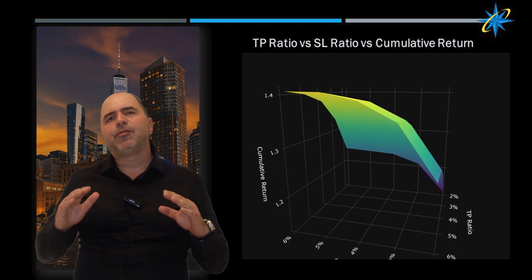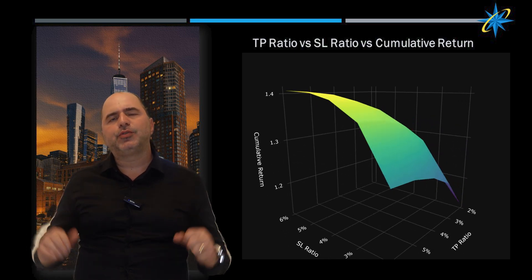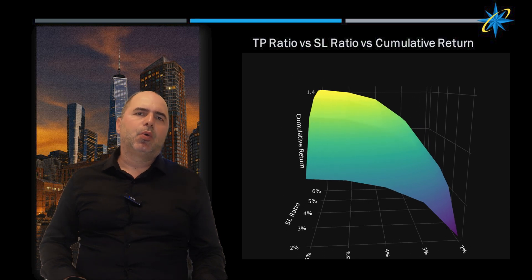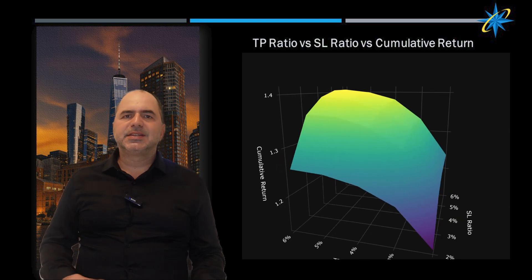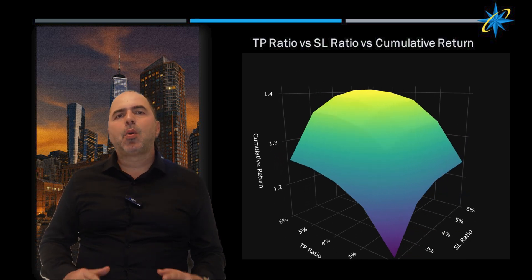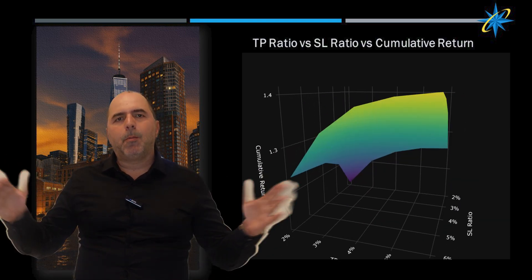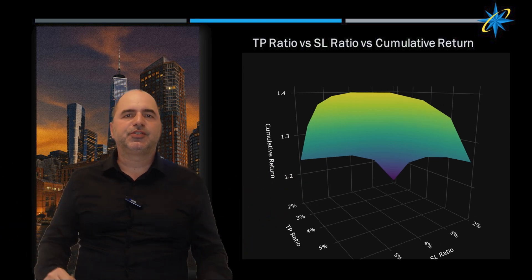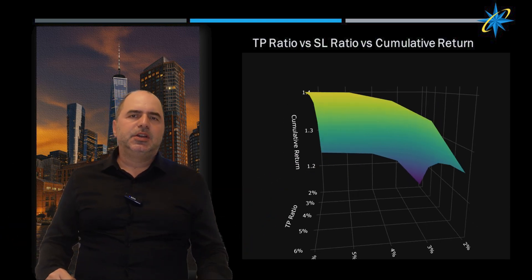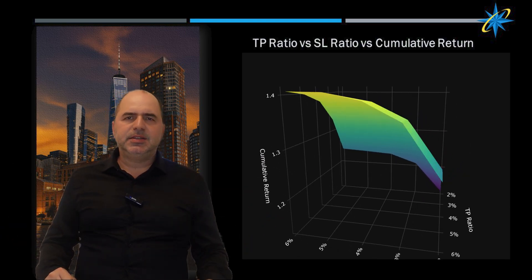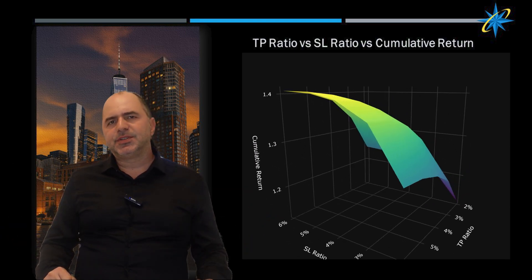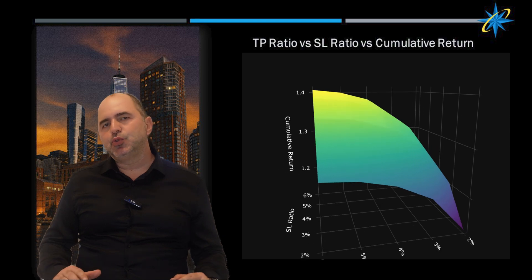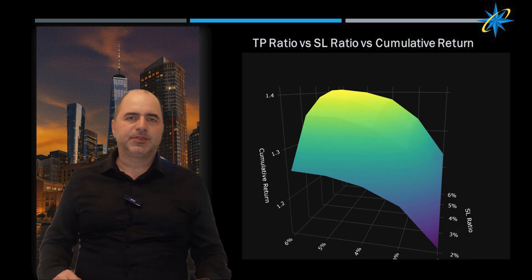For stop loss, around 4-5% is enough in low volatility; in higher volatility, give the price more room and widen your SL to around 6%. In short, high TP plus a volatility-matched SL clearly boosts performance.